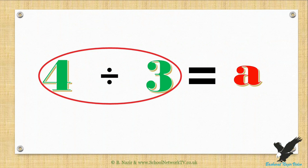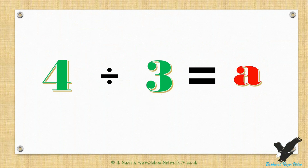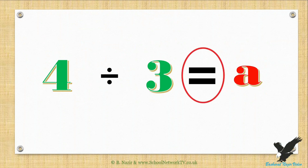An equation is divided into three major parts: a left side, which can have numbers, signs, and letters — in this equation we just have numbers and a sign; a right side, which can also have numbers, signs, and letters — in this equation we just have a letter; and in the middle, between the two sides, we have the equal sign. Whenever you see an equal sign, you know you are dealing with an equation.